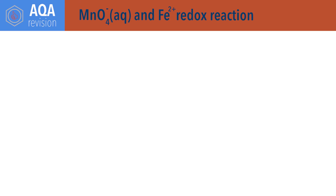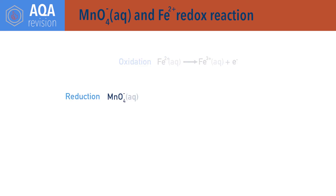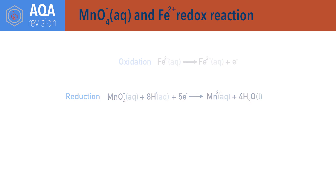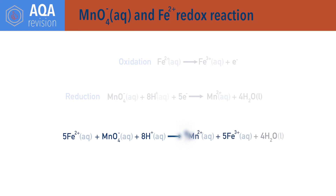Permanganate ions also react with Fe²⁺ ions in acid solution. Fe²⁺ ions get oxidised to Fe³⁺: Fe²⁺ → Fe³⁺ + e⁻. The permanganate ions get reduced, forming Mn²⁺ ions: MnO₄⁻ + 8H⁺ + 5e⁻ → Mn²⁺ + 4H₂O. Combining the two half equations gives: MnO₄⁻ + 8H⁺ + 5Fe²⁺ → Mn²⁺ + 5Fe³⁺ + 4H₂O. Again, the H⁺ ions in the half equation mean the reaction must be carried out in acid.